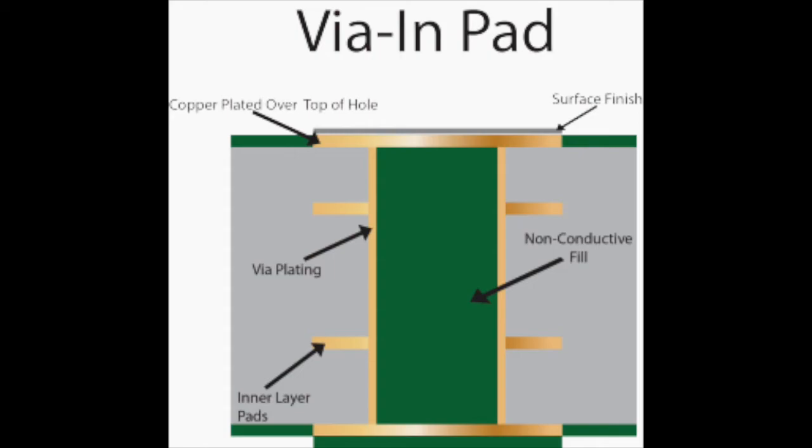Increasing the plated copper thickness in the via, even by 0.1 mil, has a much greater impact on heat transfer than conductive fill.